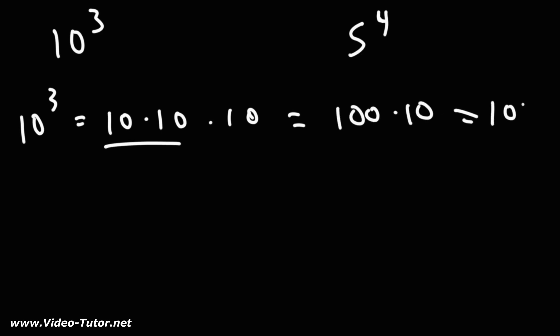For the sake of practice, let's try two more examples: 10 to the 3rd power and 5 to the 4th. 10 to the 3rd power means that we're multiplying three 10's together. 10 times 10, that's 100. And 100 times 10 is 1,000. So when you multiply three 10's together, you get 1,000.